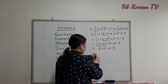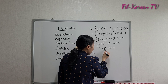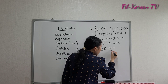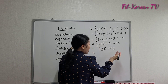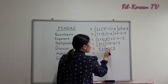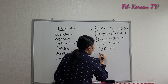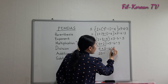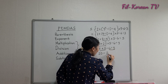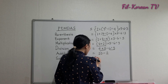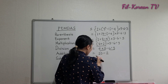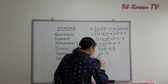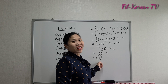4 times 5 minus 6 divided by 3. You can do the multiplication and division at the same time. 4 times 5 equals 20, and 6 divided by 3 equals 2. The last operation is subtraction: 20 minus 2. The answer is 18. This is the final answer.